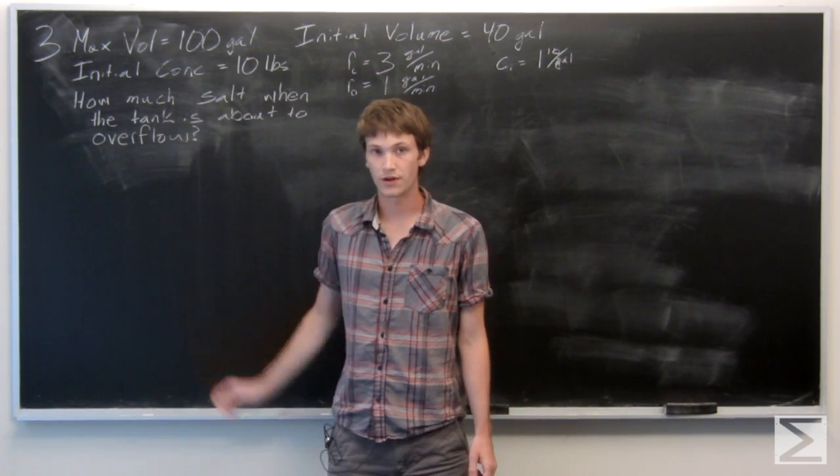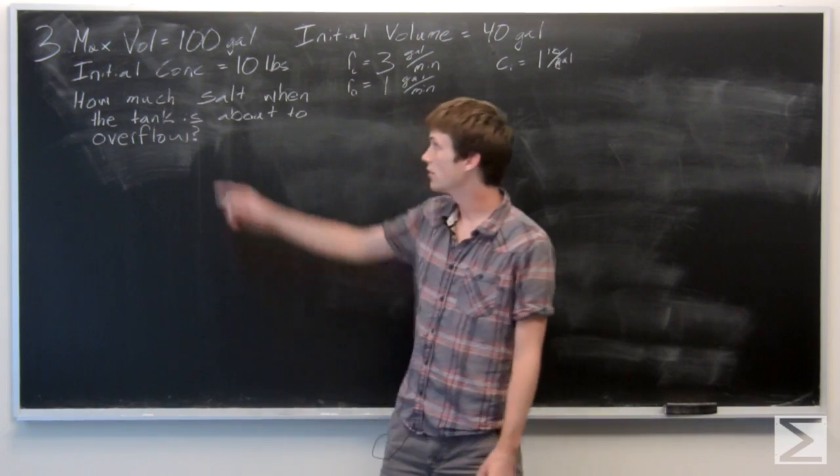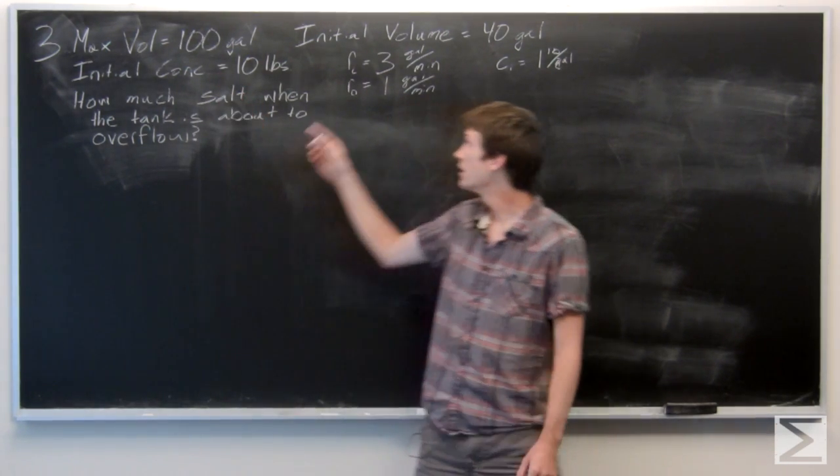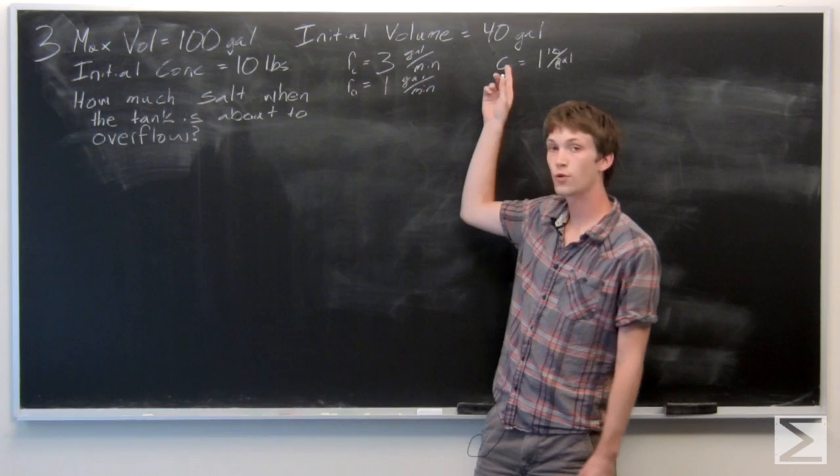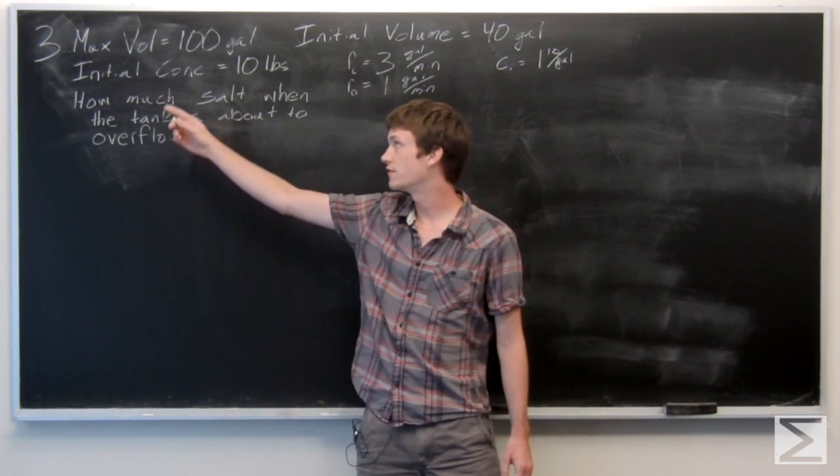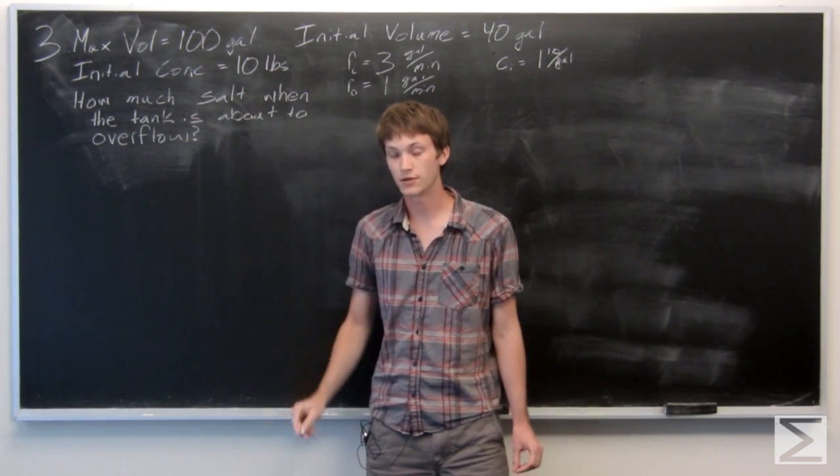Okay, in this question we're given a tank with a maximum volume of 100 gallons and an initial volume of 40 gallons with a concentration of 10 pounds of salt initially.